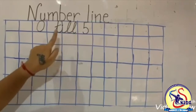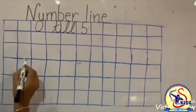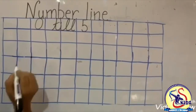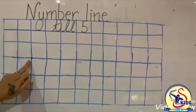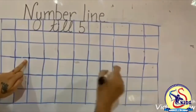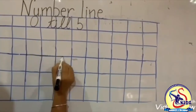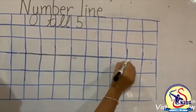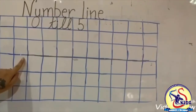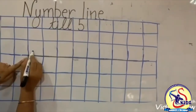From which number we will start? 0. Now kids, first we need to draw a dot. From dot, we will draw a straight sleeping line. And now from dot, we will draw an arrow.